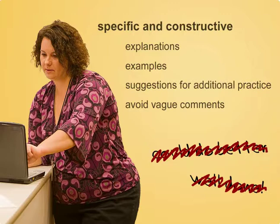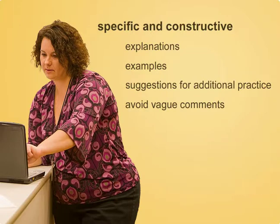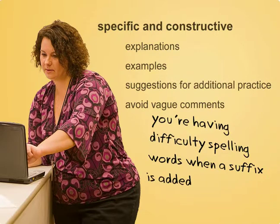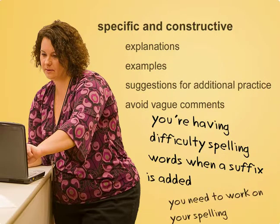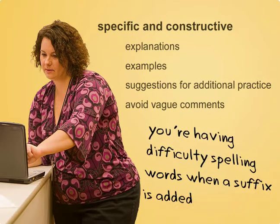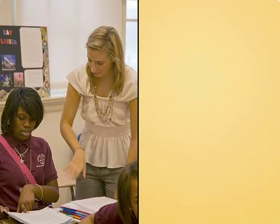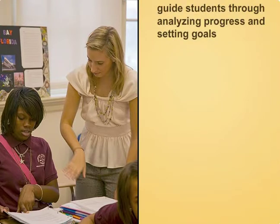Teachers need to be specific in both critique and praise. For example, "you're having difficulty spelling words when a suffix is added" is more helpful than "you need to work on your spelling." With this kind of feedback, the student knows exactly where to focus additional practice and attention for the next writing or spelling assignment. When class time is set aside for feedback, students can be carefully guided through the process of analyzing their progress and setting goals.